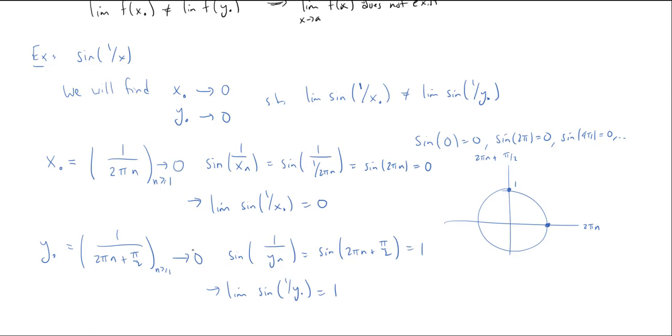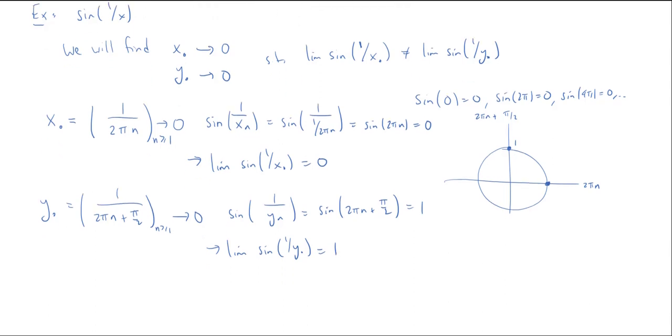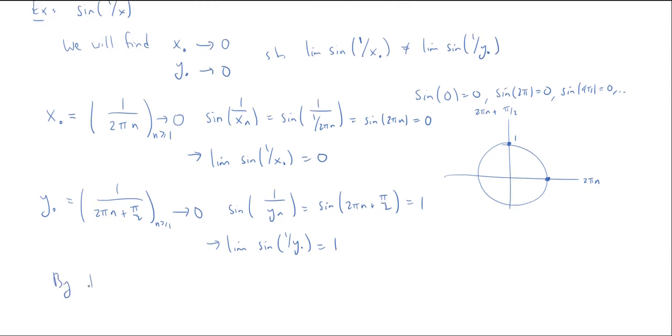So I have two sequences, X and Y, which both converge to zero, but the sine of the reciprocal of the sequence in one case converges to zero, and in the other case converges to one. So by the divergence criterion, the limit as X approaches zero of sine of one over X does not exist.